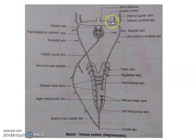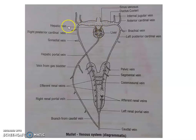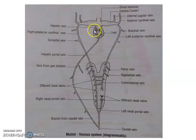Another vessel which empties blood directly into the sinus venosus is the hepatic vein. As the name suggests, a pair of hepatic veins arises from the liver. So the sinus venosus directly receives blood from two pairs of vessels: a pair of precaval veins (ductus cuvieri) and a pair of hepatic veins.